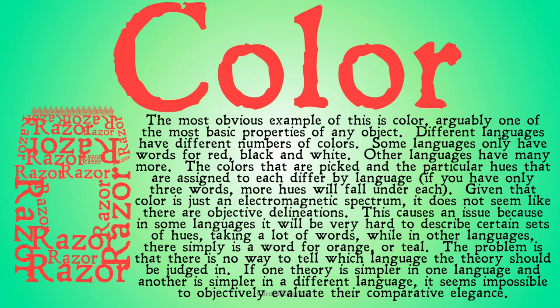The most obvious example of this is color — arguably one of the most basic properties of any object. Here's the question for the proponent of natural kinds: are colors natural kinds, and if so, what are they? Different languages have different numbers of colors. Some languages only have words for red, black, and white; other languages have many more words. The colors that are picked, and the particular hues assigned to each, differ by language. If you have only three words, more hues are going to fall under each word.